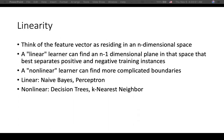The next issue I want to talk about is linearity. Linearity measures how curved the measured characteristics are. Think of a feature vector as residing in an n-dimensional space. A linear learner can fit an n-dimensional plane in that space that best separates positives and negatives from the training instances. When the learner is not linear, it can find more complicated boundaries compared to a linear learner. Linear examples are naive Bayes and perceptron, and non-linear examples are decision tree and k-nearest neighbor.